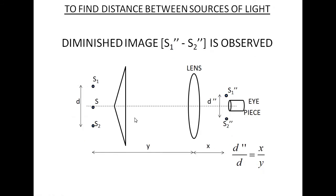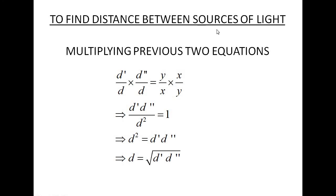Then we move the lens a little away from the prism towards the eyepiece, and a stage comes where the values of y and x change. In this new position, the distance between S1'' and S2'' becomes smaller — we call this distance d''. As before, we can write that d'' / d = distance of image from the lens divided by distance of object from the lens. Multiplying the two expressions for d gives d² = d' × d'', so d = √(d' × d''). In this way, by knowing d' and d'', we can find the distance between the two virtual sources of light.